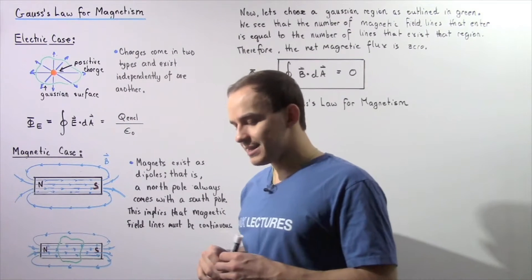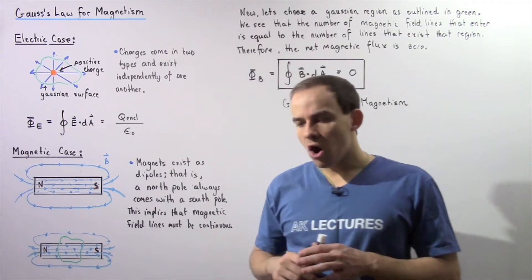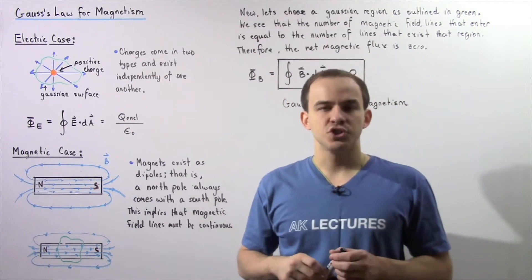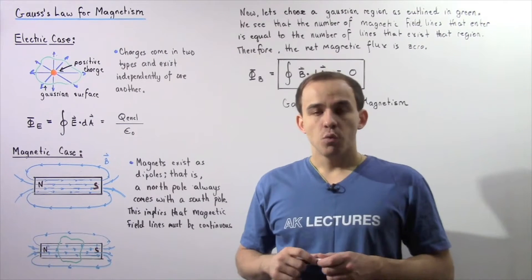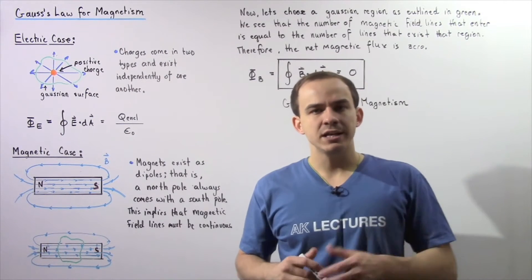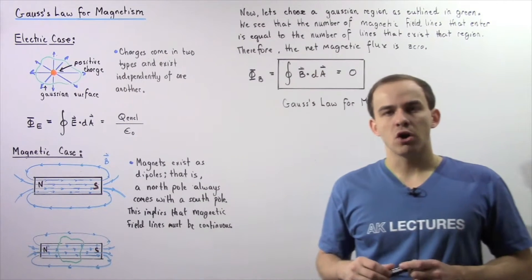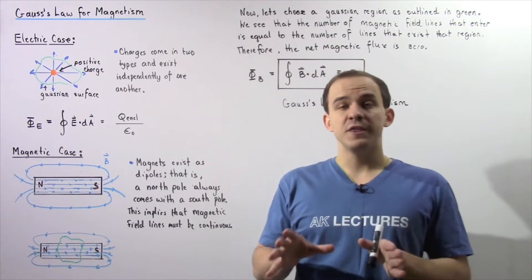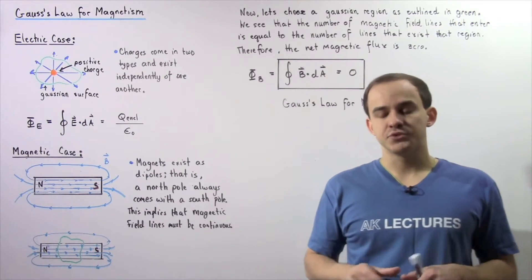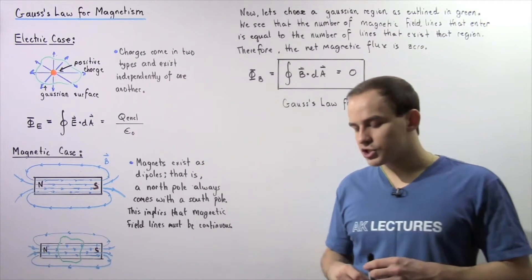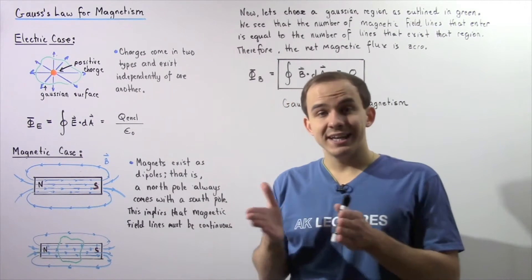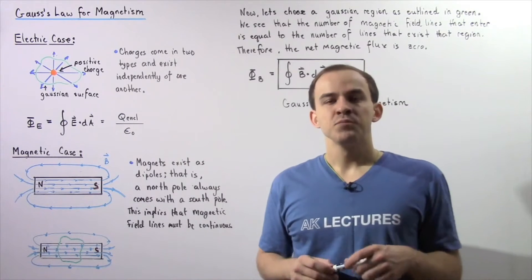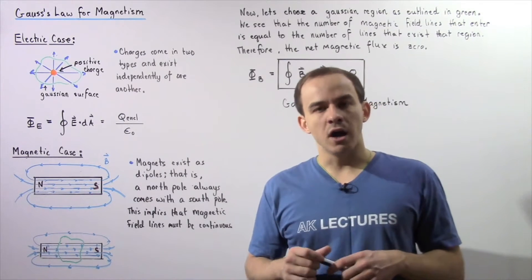In the electric case, recall that we have two types of electric charges: the negative electric charge and the positive electric charge. And these two types of electric charges essentially exist independently of one another.